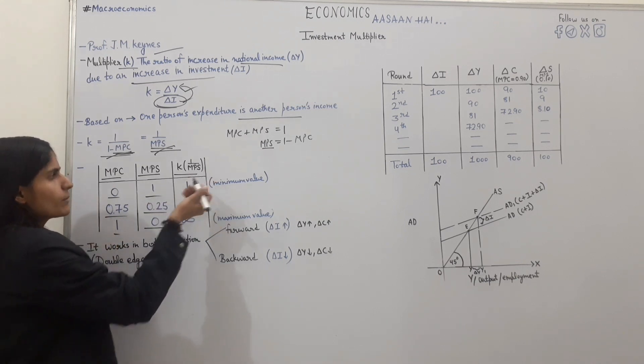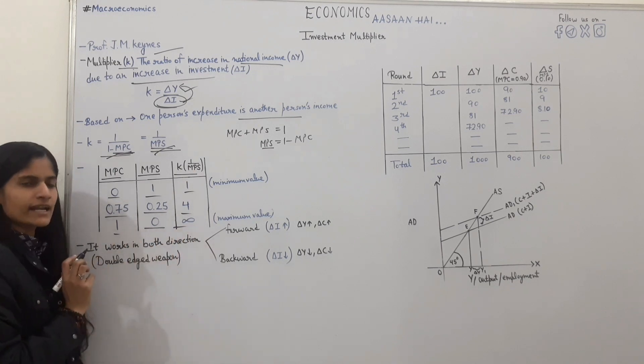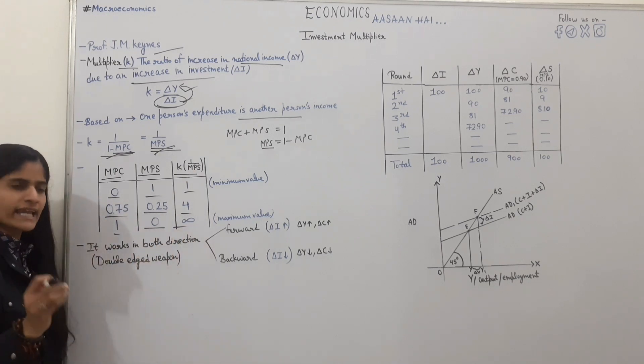K value 1 upon MPC. 1 upon 1 is 1. 1 upon 0.25 is 4. 1 upon 0 is infinite. That's the value of K, which is infinite.